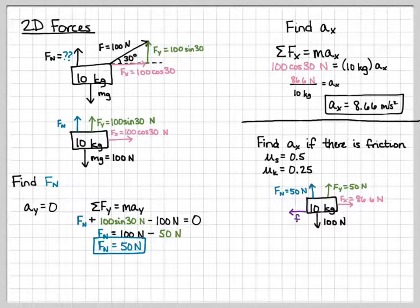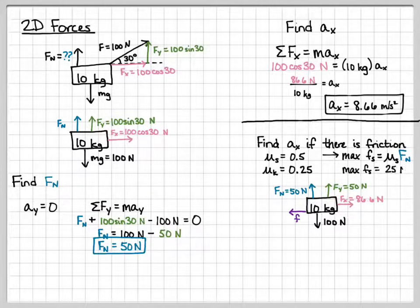So first, we have to check and see if we can overcome static friction. So for static friction, it's equal to mu s times the normal force. Plugging in our numbers, half of our normal force is just 25 newtons. So our applied x-force is 86.6, and that is greater than our 25 newtons. So we know that it's going to move and that it's governed by kinetic friction.